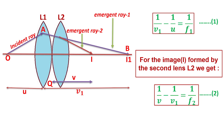For lens L1, image formation I1 takes place, and for this image I1 there is object O. But for the image I formed by the second lens L2, I1 acts as the object. So we get: 1/V minus 1/V1 equals 1/F2. Suppose this is equation 2.